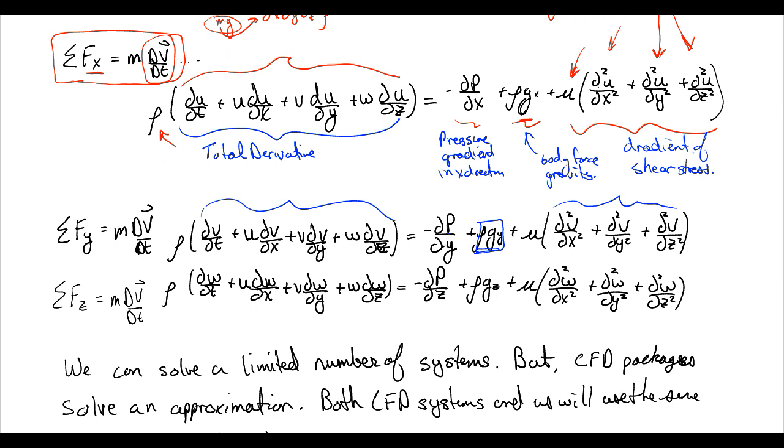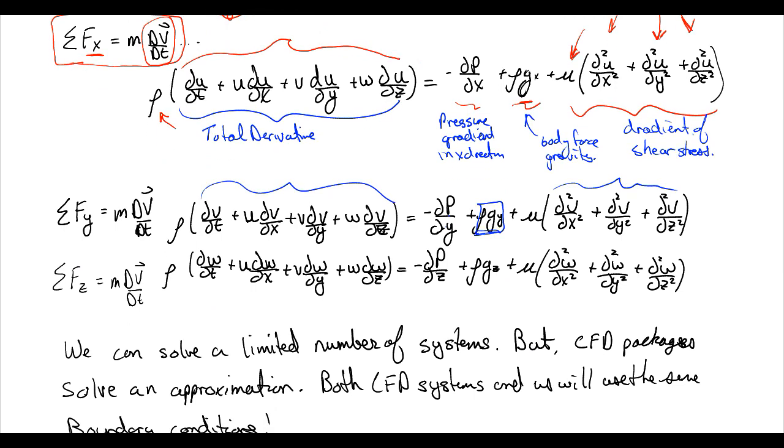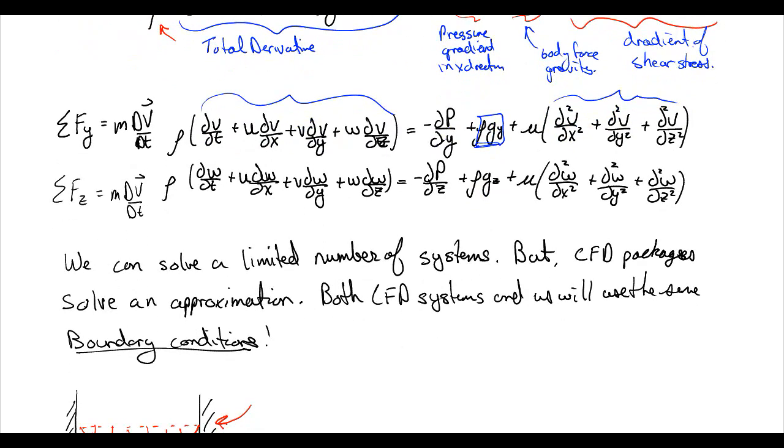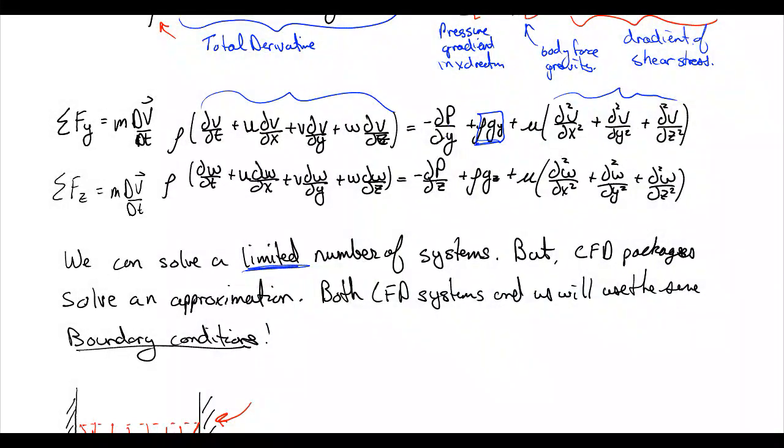So that's Navier-Stokes' equation. Well, you can write it as a single equation if you use vector notation. Here we have, and here we've written all three components out. And we can solve this for a limited number of systems. I can't remember how many it is. I think there's 16 or 17 known solutions to Navier-Stokes' equation or something like that. CFD packages solve an approximation to Navier-Stokes' equation. And you can also, I think there's commercial packages nowadays that allow you to do what they call direct numerical simulation of Navier-Stokes, but it's tremendously computationally intensive.